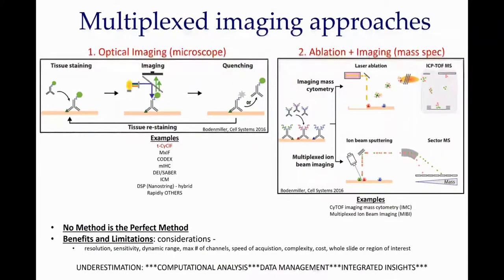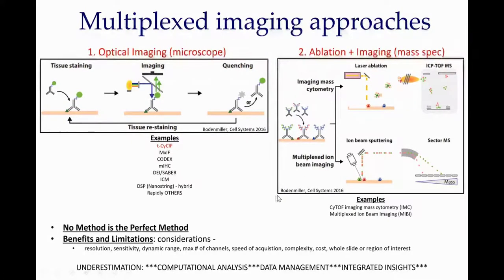There are optical imaging methods and ablation imaging methods. These generally use antibodies conjugated either directly or indirectly to fluorophores, and fluorophore signal is captured by a microscope. Other methods use antibodies conjugated to metals with laser ablation or ion beam sputtering. No method is the perfect method — there are benefits and limitations to each, and considerations include resolution, sensitivity, dynamic range, maximum number of channels, speed of acquisition, complexity, cost, and whether you need whole slide imaging or region of interest analysis.